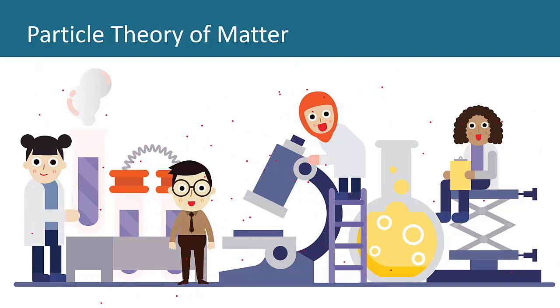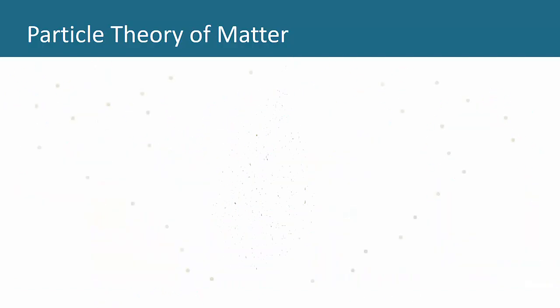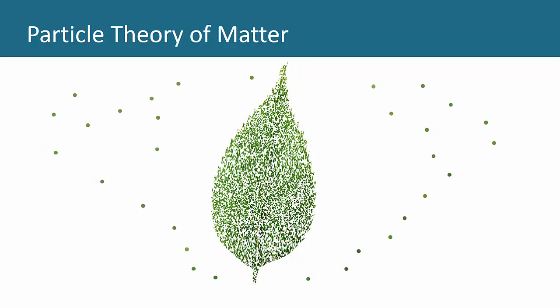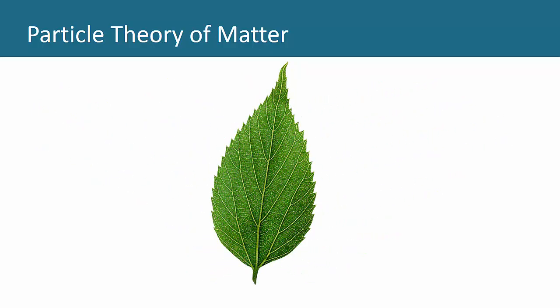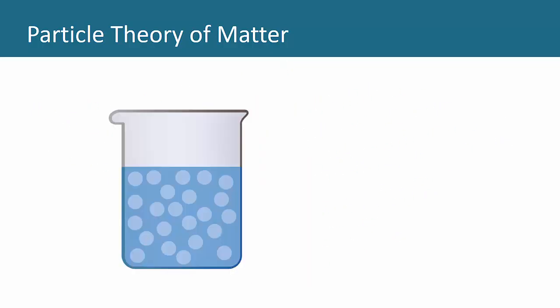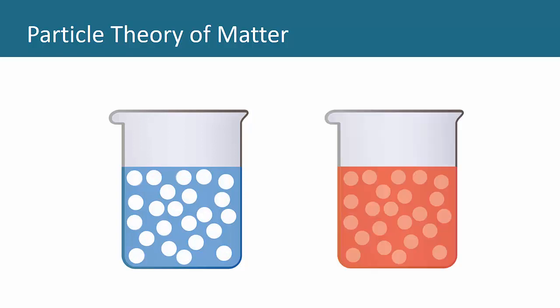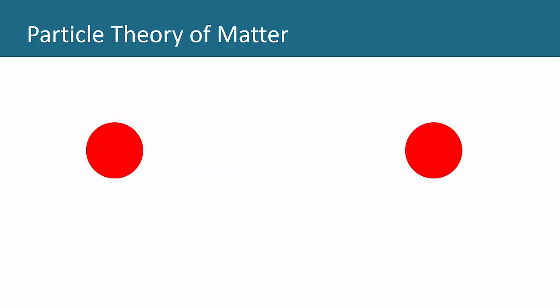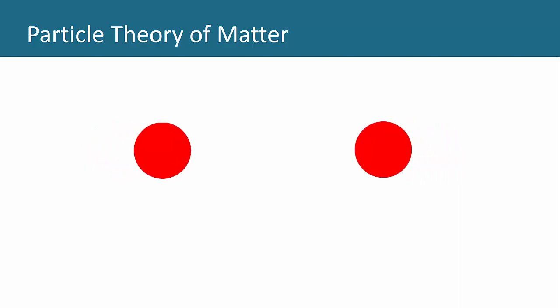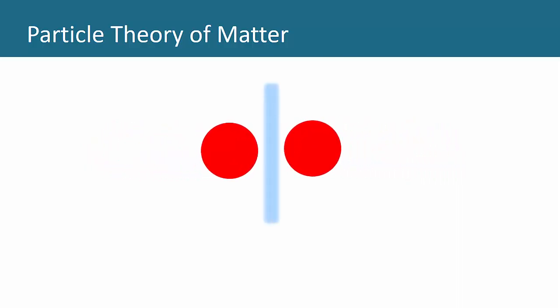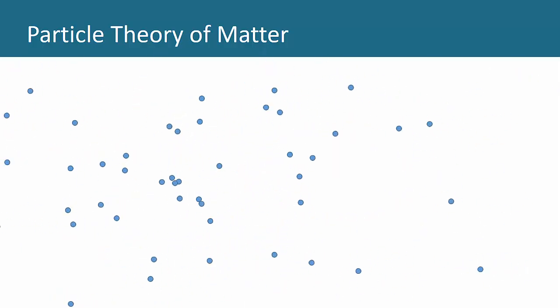These are the key points of the particle theory: First, all matter is made of very small particles. All particles in a pure substance are the same. Different substances are made of different kinds of particles. Next, particles in a substance are attracted to each other and there are spaces between the particles.